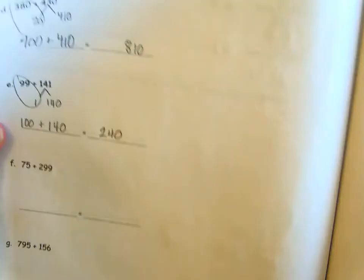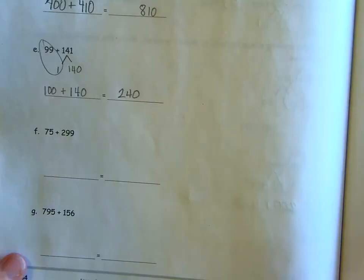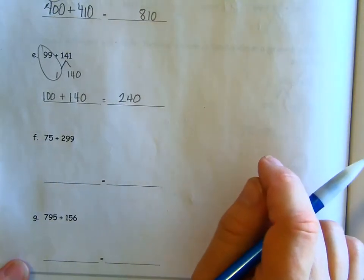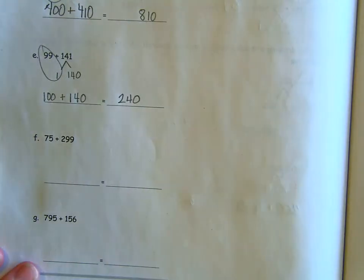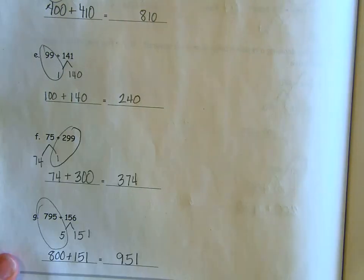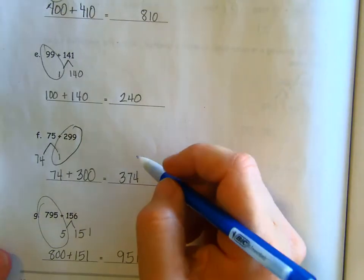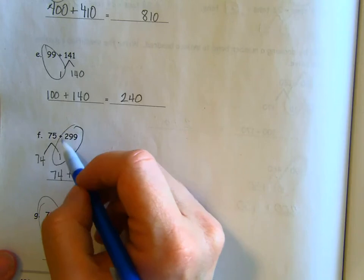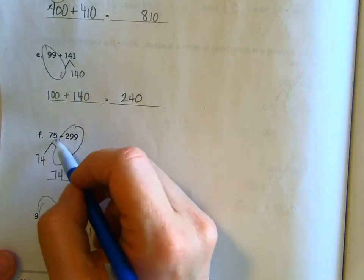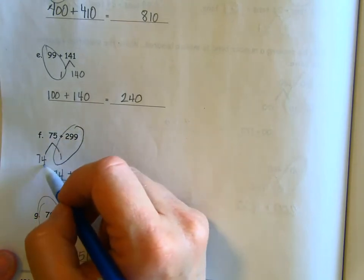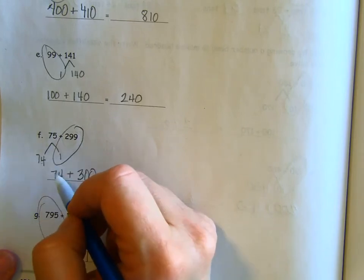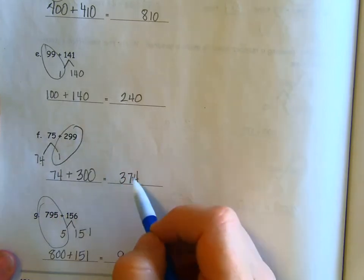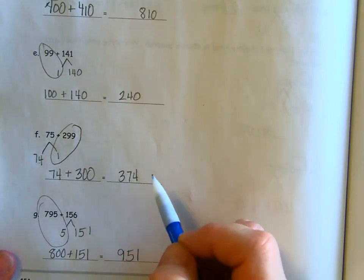There's just two more, everybody. Do the same thing with these that you did with the last one. I want you to pause and then check your work. Okay, everybody. Taking a look first at F. We only need one more to get that to 300. So we're going to take it from 75, which leaves us with 74 over here. 74 plus 300. Much easier problem. 374.